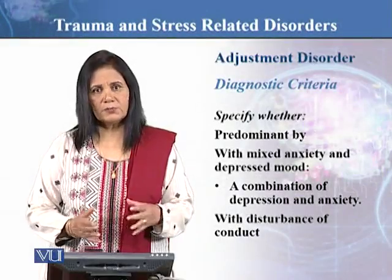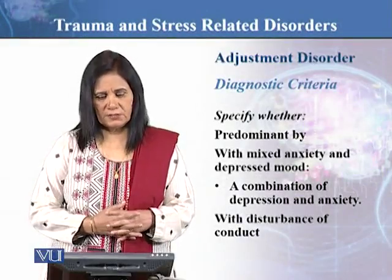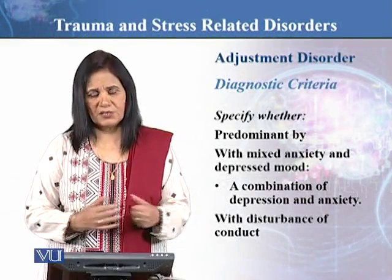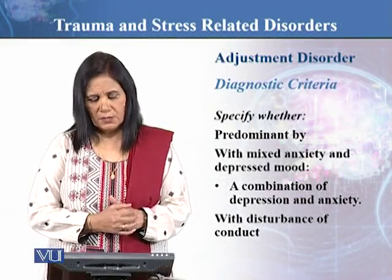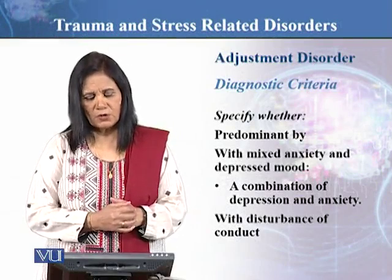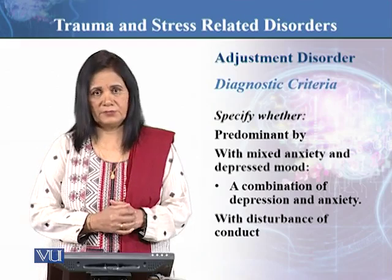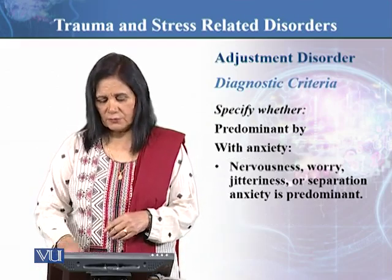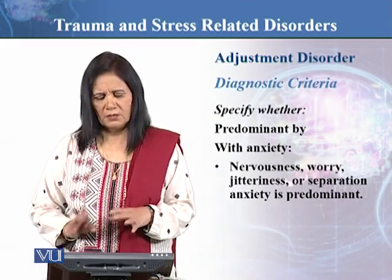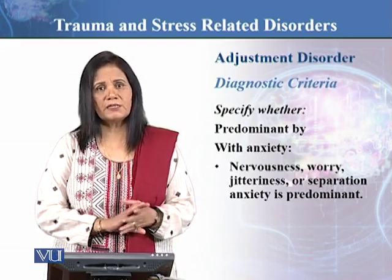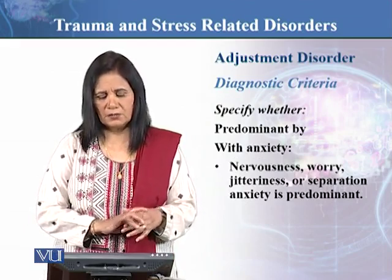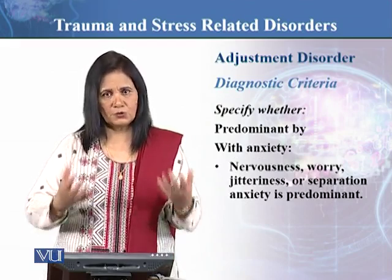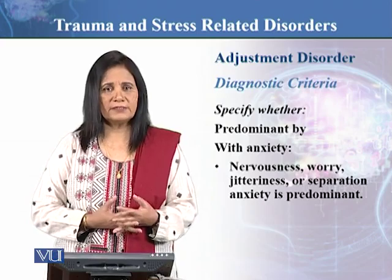Now we look at another specifier. As we have seen, you have to specify whether it is with depressive features. Similarly, you also have to see whether it is with anxiety features. For example, the individual is showing nervousness, worry, jitteriness, separation anxiety, or any other features which are predominantly showing that the individual has anxiety.